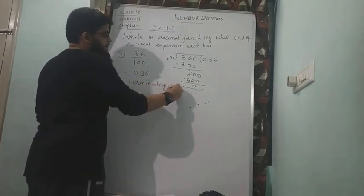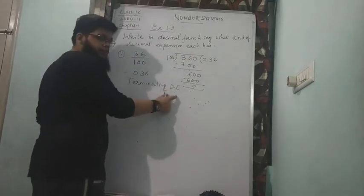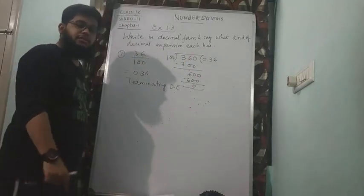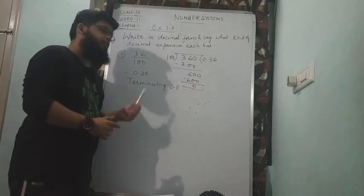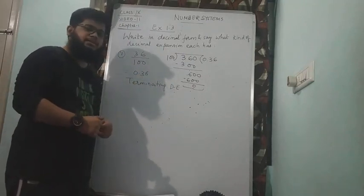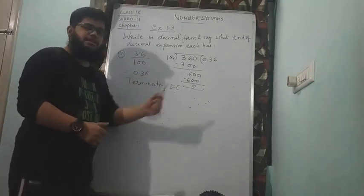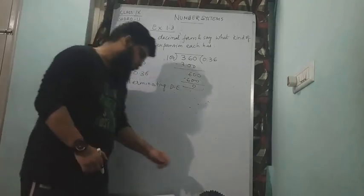Terminating decimal expansion. I am writing in short form. DE means decimal expansion. So it is a terminating decimal expansion. I hope you have understood how this is a terminating decimal expansion because the remainder has become 0. Let us discuss one or two questions more.